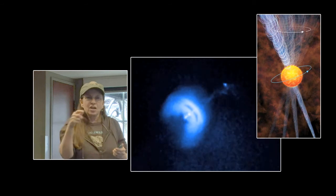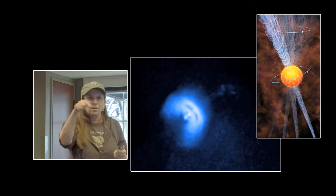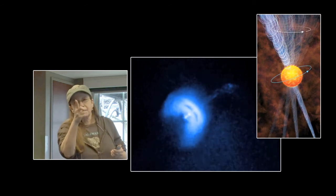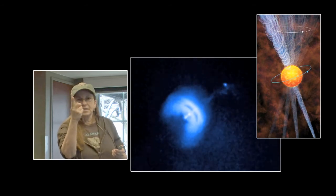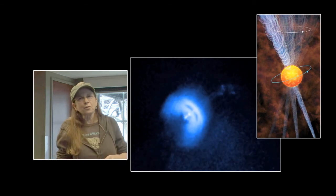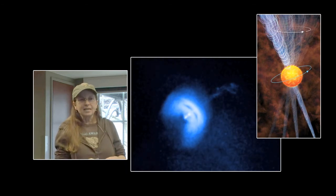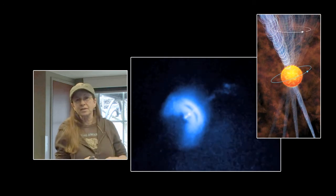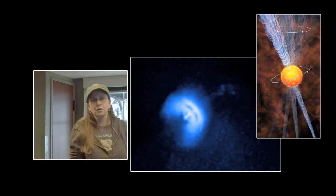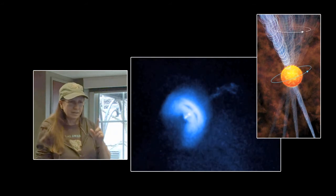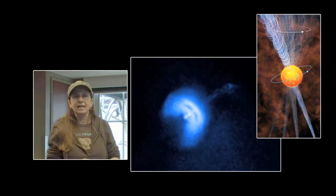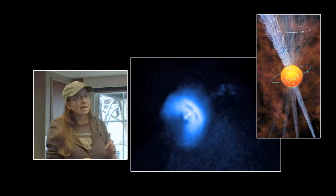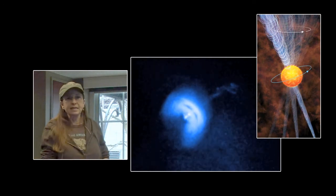When you spin a top and it starts to slow down, it starts to wobble and wobble and wobble. And when it wobbles, the top of that top is pointing at different areas as it goes around. So the Earth has a precession rate as the terrestrial pole sweeps a big circle around the sky. It takes 24,000 years for the Earth. That's its precessional rate. Well, the precessional rate for this little pulsar, which is spinning 11 times every second, is 120 days.